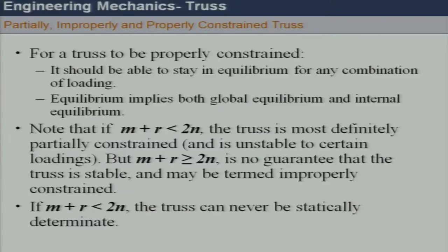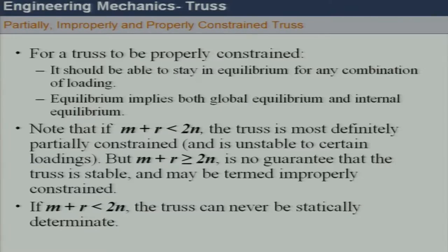When m plus r is less than 2n, we call the truss partially constrained, because it will never satisfy the equilibrium conditions. When m plus r equals or is greater than 2n, there is still a possibility that the truss is unstable — in that case we say it is improperly constrained.